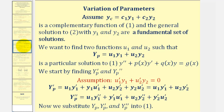To begin the derivation, we'll assume that y_c, given by this sum, is a complementary function of equation one and the general solution to equation two, where equation one is the non-homogeneous differential equation and equation two is the homogeneous differential equation. Here y₁ and y₂ are a fundamental set of solutions. Our goal is to find two functions, u₁ and u₂, such that y_p is a particular solution to equation one.